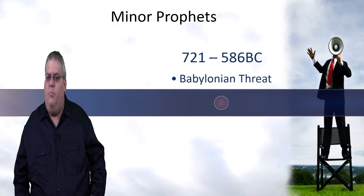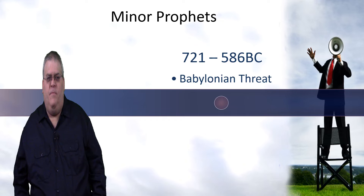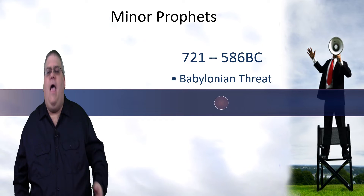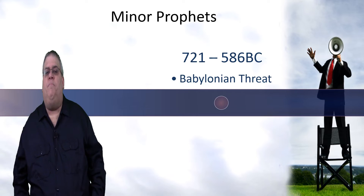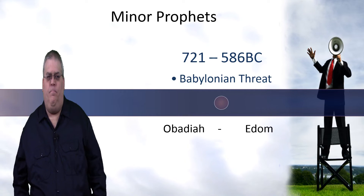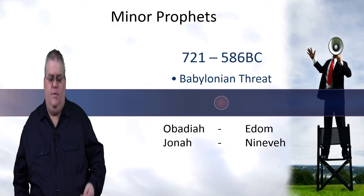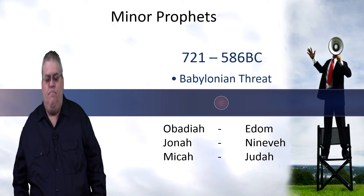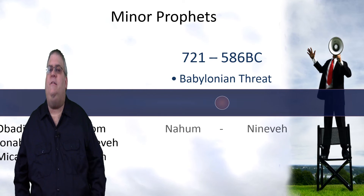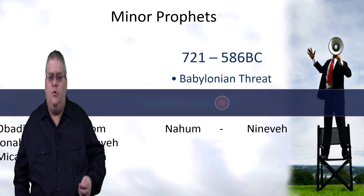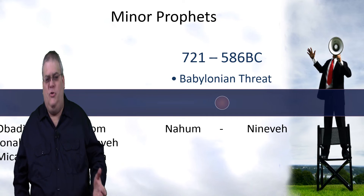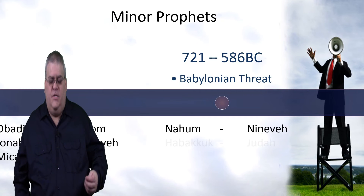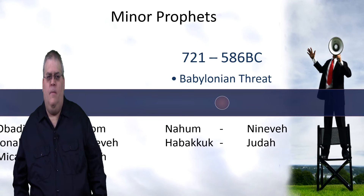And then the next group are the books written after 721-722 and before 586-587 — that is, between the Assyrian conquest and the Babylonian conquest. The first of these books is Obadiah, which was written to Edom. Then Jonah, which is written about Nineveh, the capital of the Assyrian Empire. And then is Micah, written to the southern kingdom Judah. And then is Nahum, which was also written to Nineveh, but probably written about a generation after Jonah. And then is Habakkuk, written to Judah. And then finally in this group is Zephaniah, written to the southern kingdom Judah.